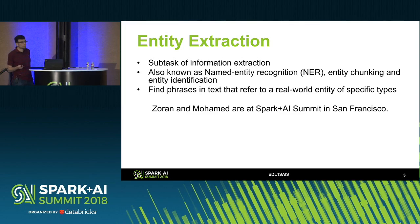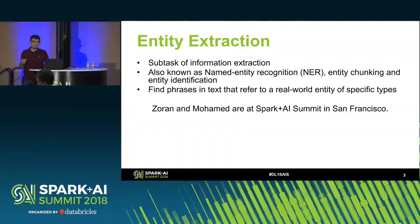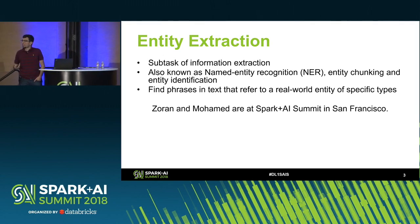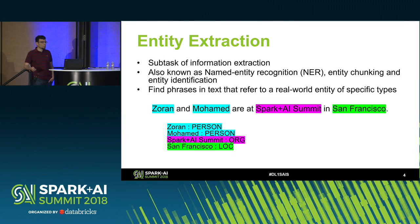Consider a short example sentence — free text, unstructured. The question is what types of information can we extract from this sentence automatically? As humans, it's clear: Zoran and Mohammed are person names, San Francisco is a city name, and so on. But for a machine, for a computer, how do we understand this? We need something that can highlight the information inside the text.